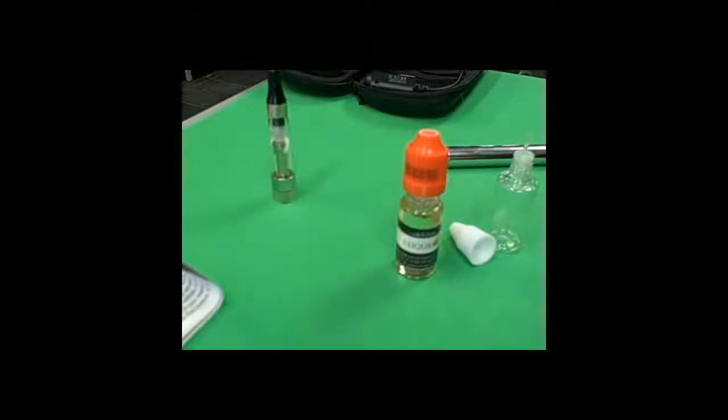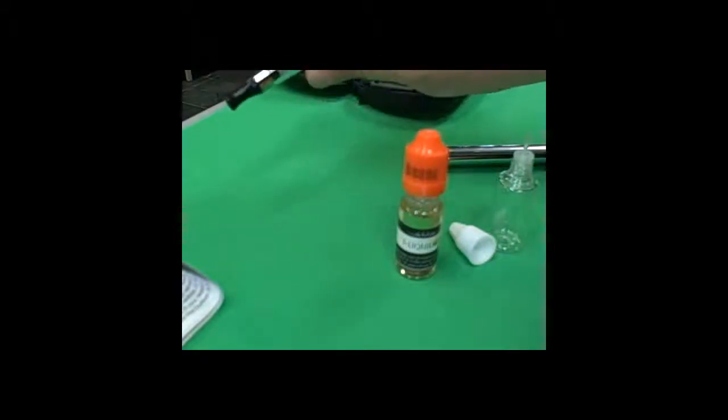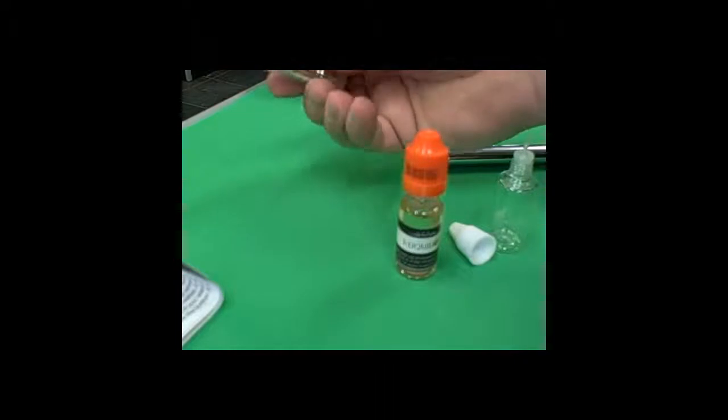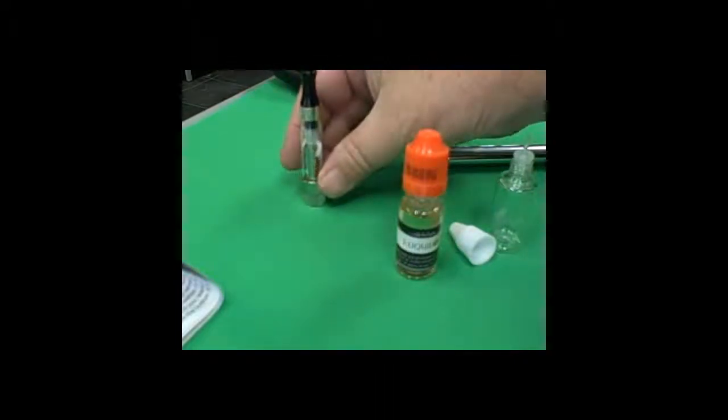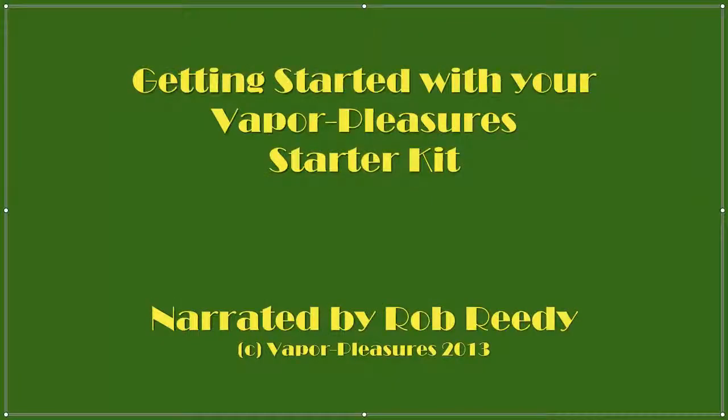If you get to the point where you taste it kind of burnt, check your wick, maybe roll it around, make sure it gets good and wet, and then try hitting on it. And there you have your new e-cigarette, and you'll be ready to go.